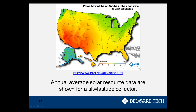The map measures kilowatt hours per meter squared per day — how much sunlight energy in kilowatt hours hits one square meter in a day. Red areas indicate high amounts of sunlight; bluish or purplish areas indicate low amounts. It makes sense that Alaska is very blue and the southwest is very red. Delaware is right in the middle at about four kilowatt hours per meter squared per day.